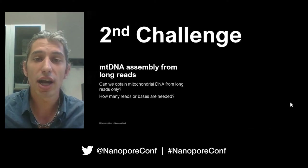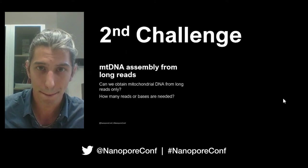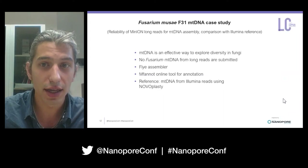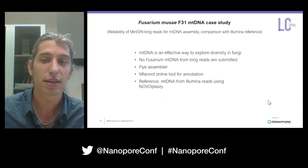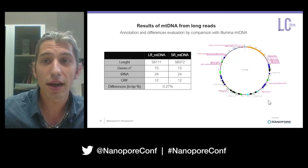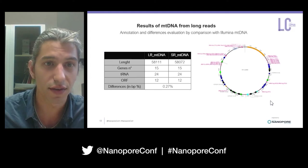The second challenge after the assembly of the genome was to assemble the mitochondrial DNA using only long reads, and also to evaluate how many reads or base pairs are needed to build mitochondrial DNA. For this, the chosen tool was Flye, which is able to detect and assemble circular sequences automatically. The output was annotated using the MFAnnot Online tool and compared with the reference created using short reads and NovoPlasty. The comparison shows 0.27% of differences in terms of bases, but this is not reflected in the detected genes, which result identical.